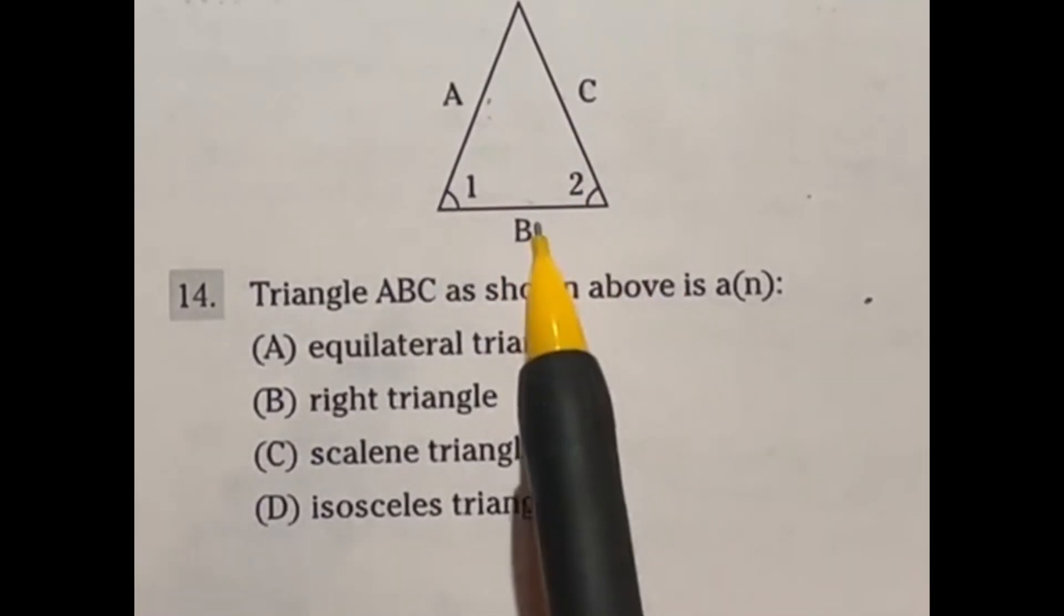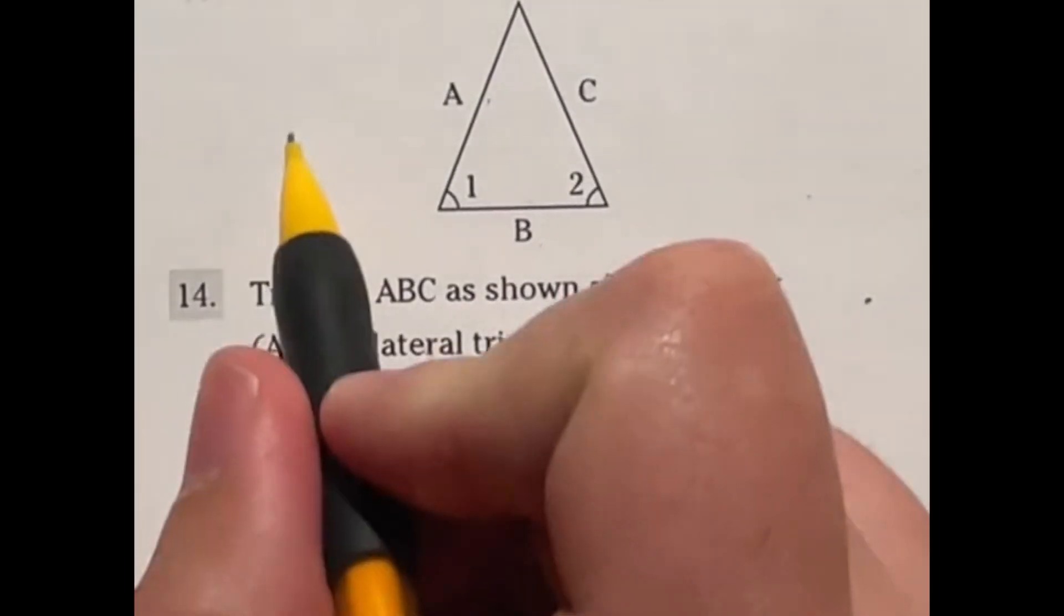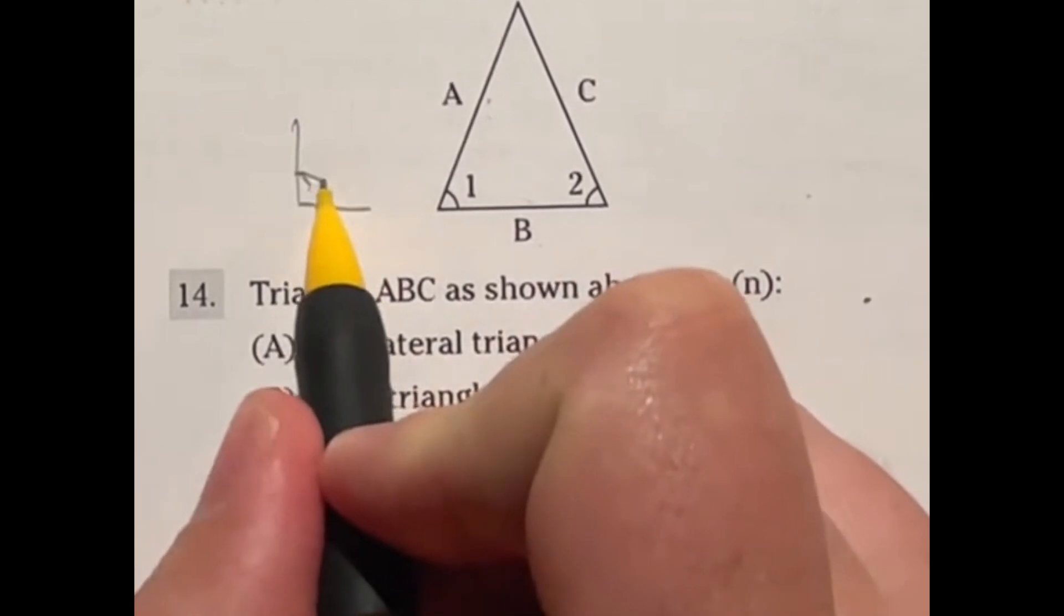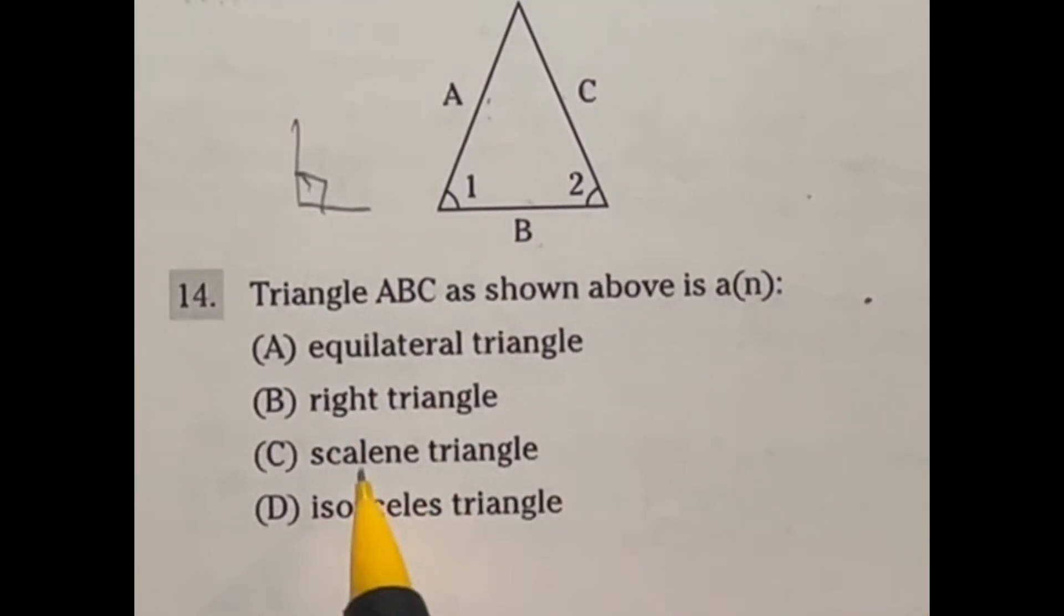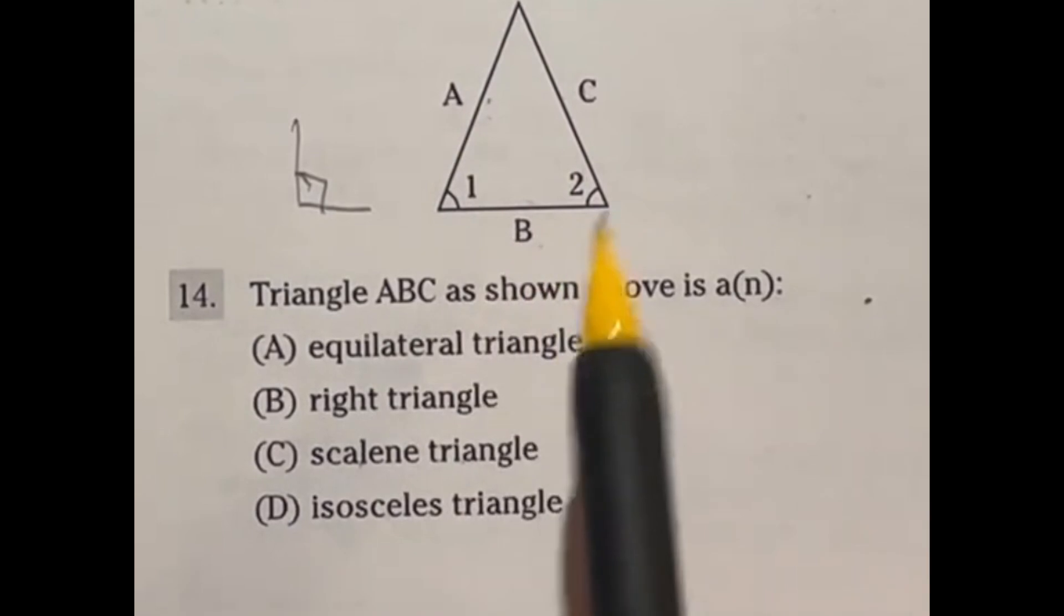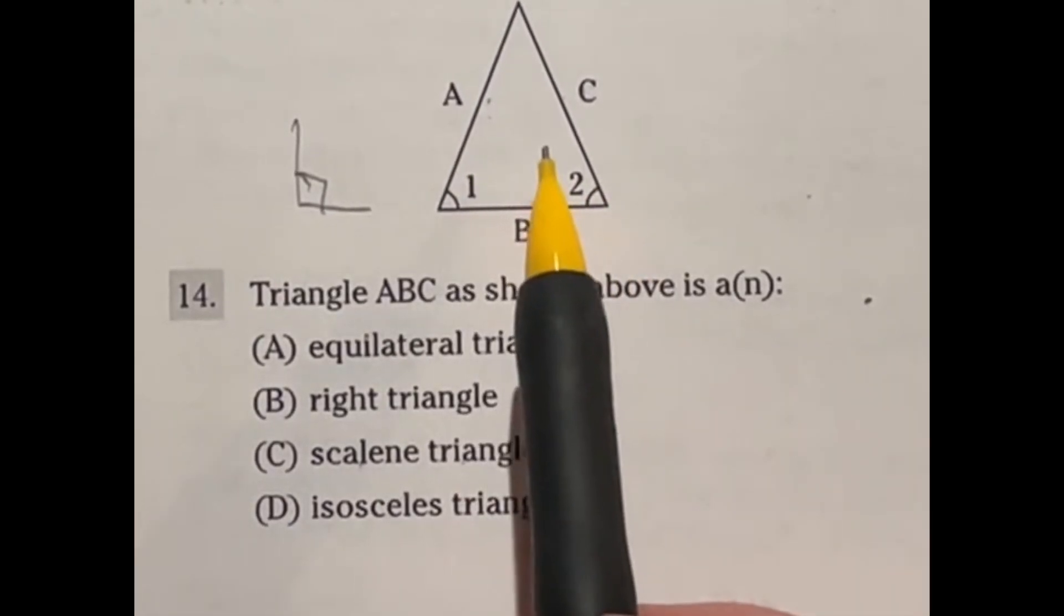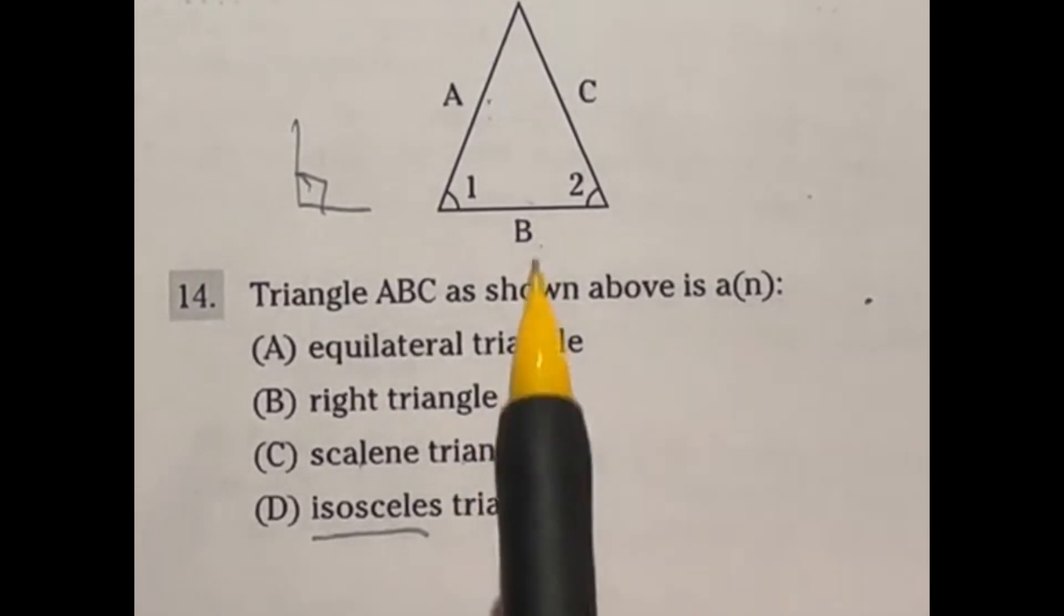For there to be a right triangle means that you have a 90 degree angle, which is usually represented with this square. And I don't see any of that as well. So it's not a right triangle. Scalene triangle means that all three sides are a different length. Now that could be a possibility as well. But I'm going to show you why it's not in just a second. Isosceles means that exactly two of the sides are the same. In this case, this is going to be true. And let me tell you why.